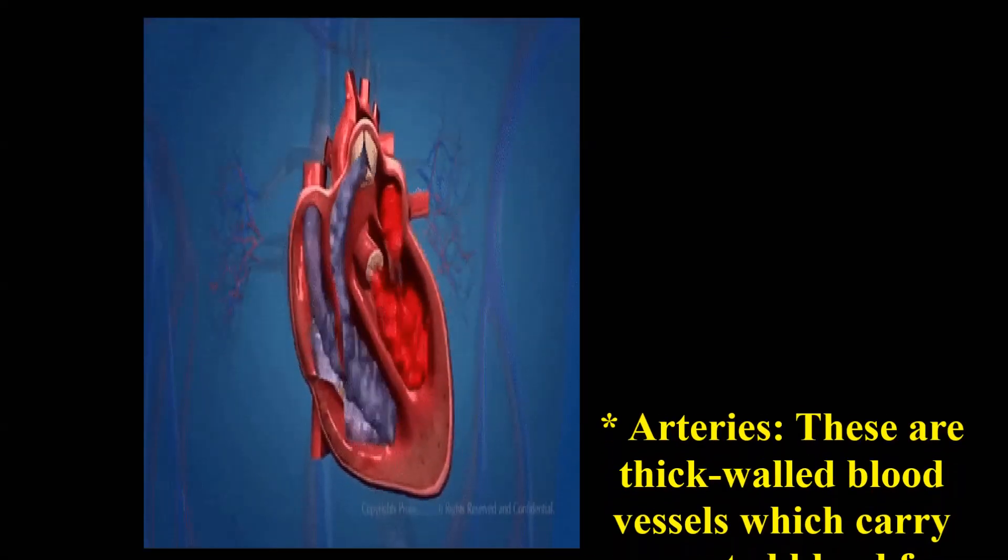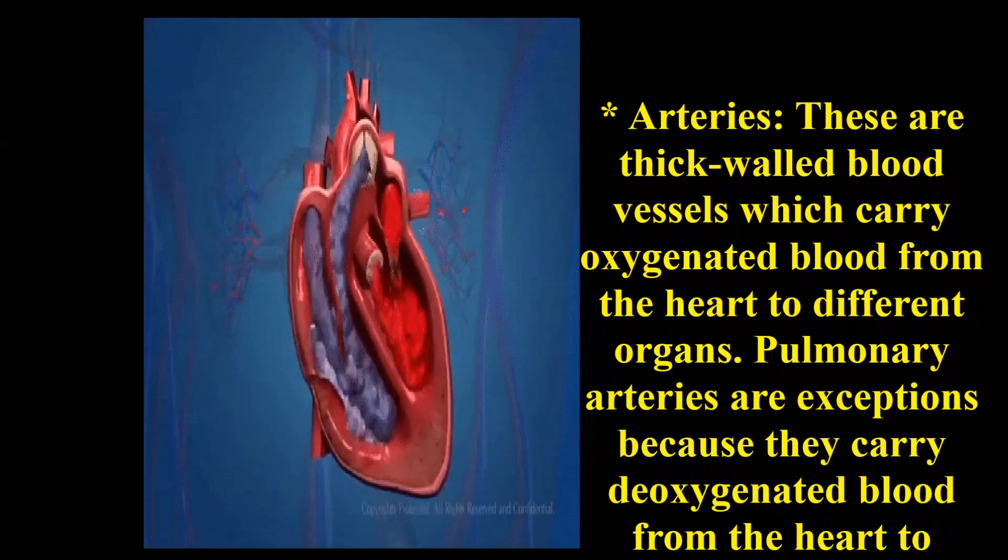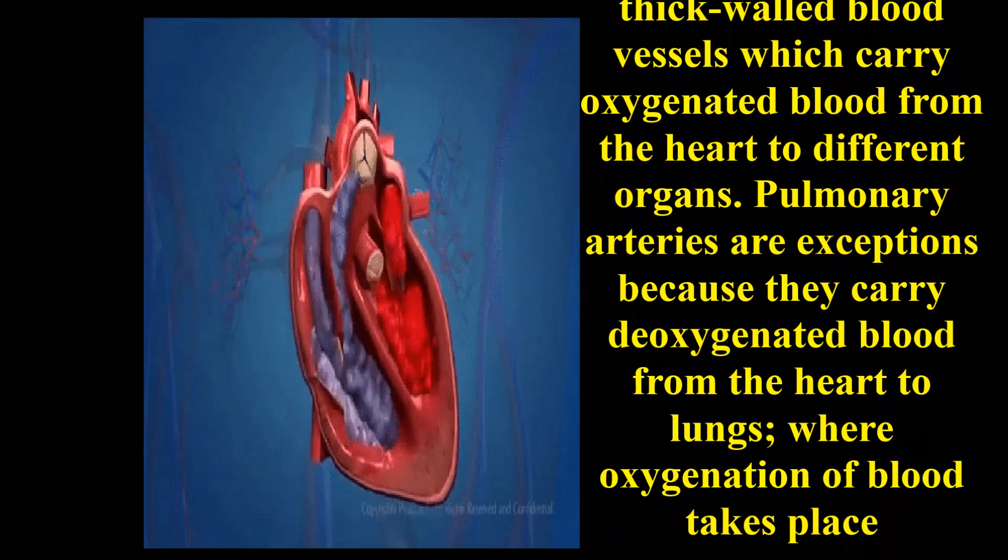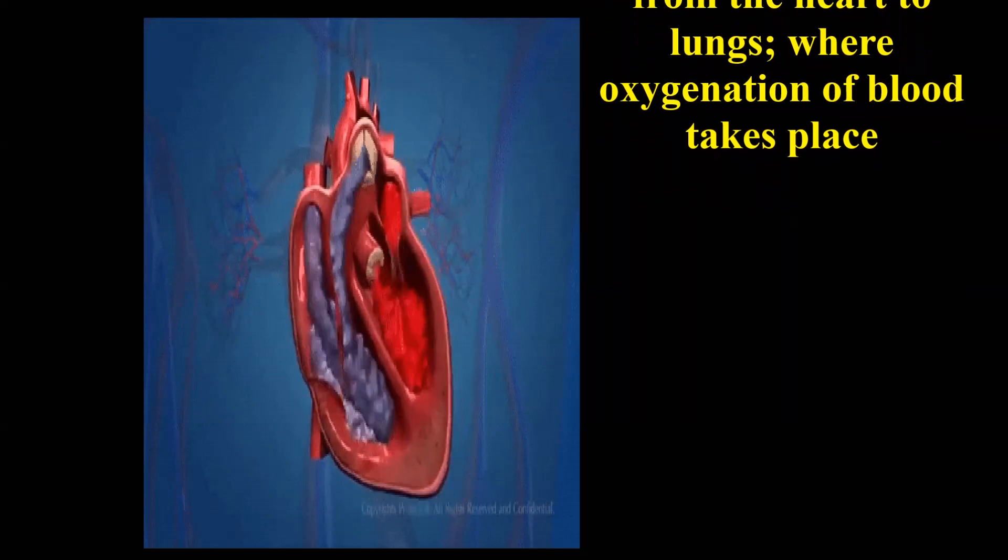Arteries are thick-walled blood vessels which carry oxygenated blood from the heart to different organs. Pulmonary arteries are exceptions because they carry deoxygenated blood from the heart to lungs, where oxygenation of blood takes place.